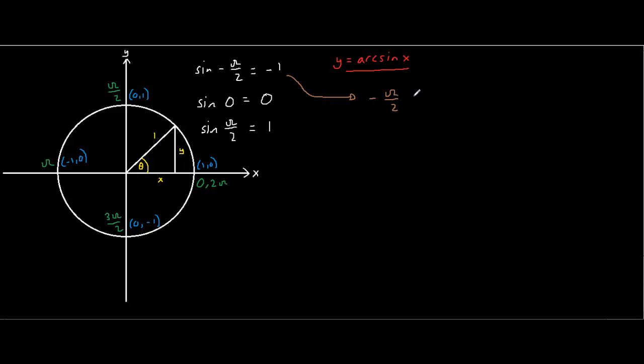Minus pi over 2 equals arcsin minus 1. 0 equals arcsin 0. And pi over 2 equals arcsin 1. Now these values right here are actually y values, and these values right here are actually x values when you think about this equation right here.